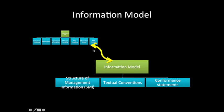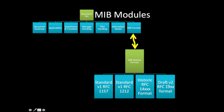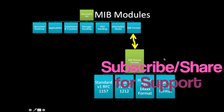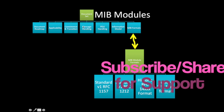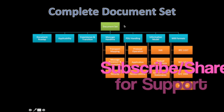Next we have the information model, which covers the Structure of Management Information, textual conventions, and conformance statements. SMI establishes the notation for defining object modules and other elements of managed information. Textual conventions define MIB modules as new types, and conformance defines acceptable lower bounds of implementation. The MIB module will have standard V1 format from RFC 1157, standard V1 RFC 1212, then RFC 14XX format, and draft V2 RFC 19XX format.